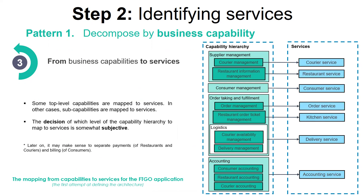Some top-level capabilities, such as consumer management and the accounting capability, are mapped to services. In other cases, sub-capabilities like order management or courier management are mapped to services. It can also make sense to change this proposed mapping — for example, separating payments for restaurants and couriers and billing of consumers. The decision of which level of the capability hierarchy to map to services is somewhat subjective, and there is no strict rule to follow, but this matching still makes sense.